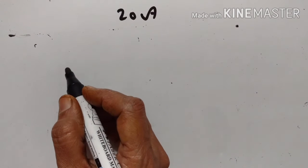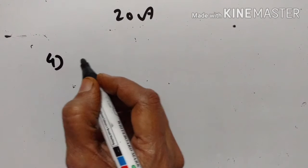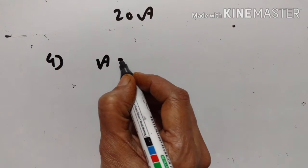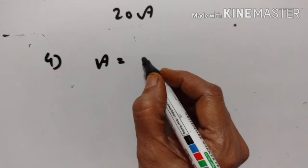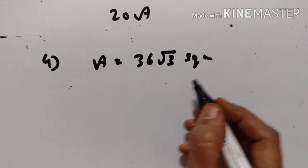One particular sum is missing in my previous video. Exercise 20√3, fourth problem. The area of an equilateral triangle is 36√3 square centimeters. Find its perimeter.